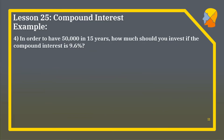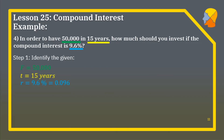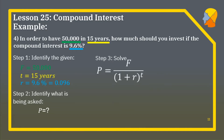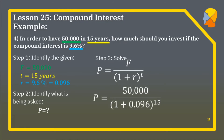In order to have 50,000 in 15 years, how much should you invest if the compound interest rate is 9.6%? We identify the given: F = 50,000 pesos; T = 15 years; R = 9.6%. We are asked for the principal. Using the formula P = F over the quantity 1 plus R raised to T and substituting the values, we obtain a principal of 12,641.88, which is our final answer.